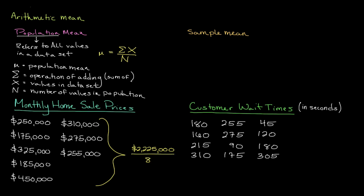The next step is to divide the sum of our population values by the number of values in our population. Counting the number of values in our population, we know that we have 8 values. We divide $2,225,000 by 8, which produces a population mean of $278,125. So the mean of our population, or the approximate center of the dataset, is $278,125.